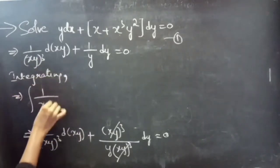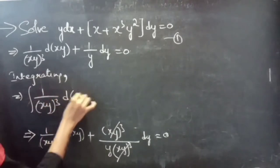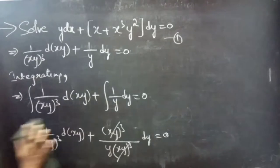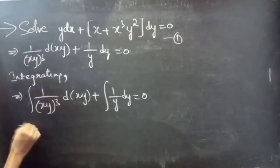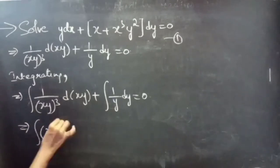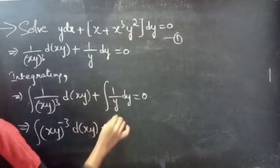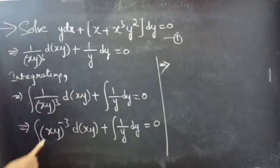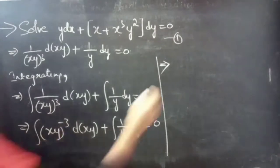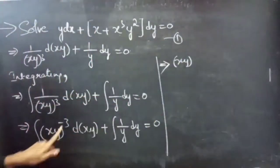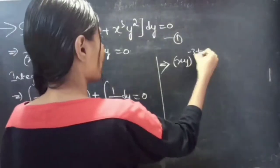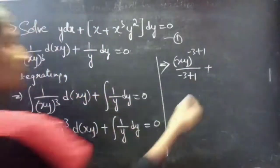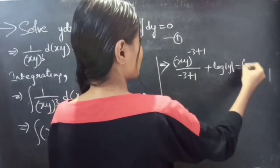Integrating: integral of 1/(xy)³ d(xy) plus integral of 1/y dy equals to 0. Writing 1/(xy)³ as (xy)^(−3), the first integral gives (xy)^(−2) divided by (−2), and the second integral gives log|y|, equals to constant log c.